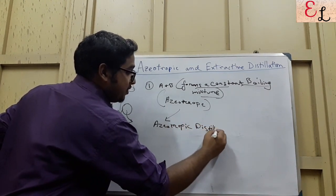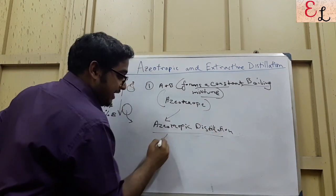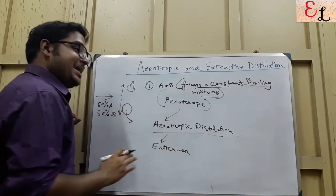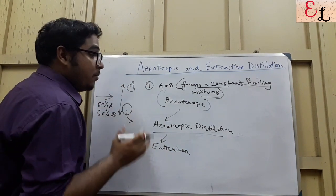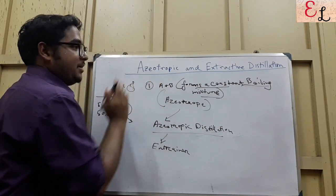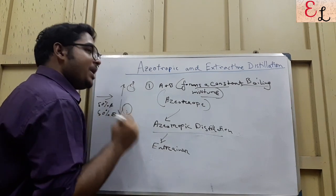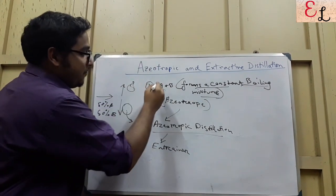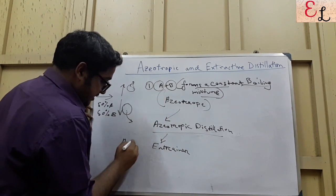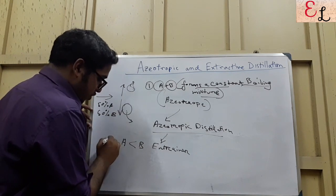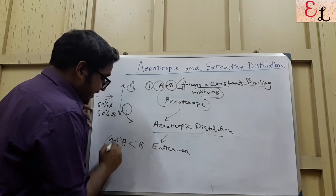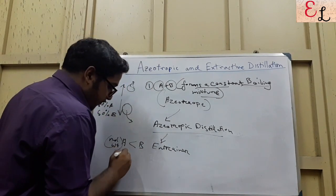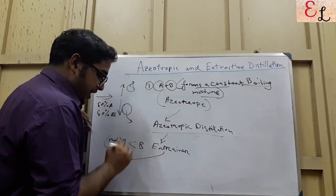What is azeotropic distillation? We deliberately feed in an entrainer. That entrainer forms a minimum boiling azeotrope further with component A. As the name suggests, a minimum boiling azeotrope requires minimum boiling to form vapors. If A is lighter than B — meaning the molecular weight of A is less than B and the volatility of A is more than B — then if we mix C, the entrainer, into the mixture of A and B, A and C will form an azeotrope.